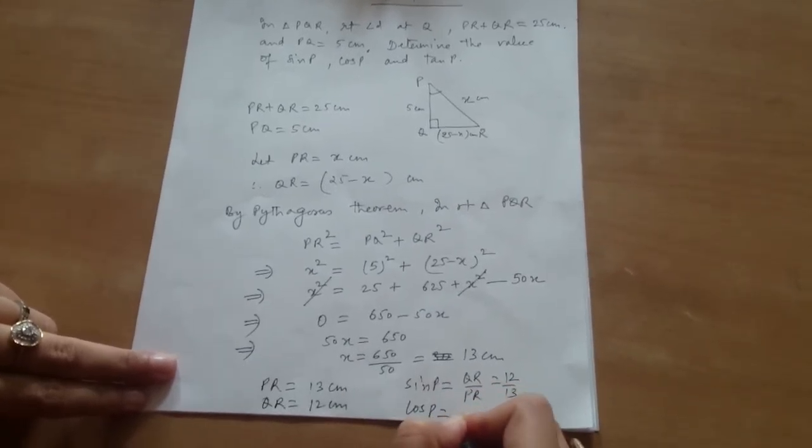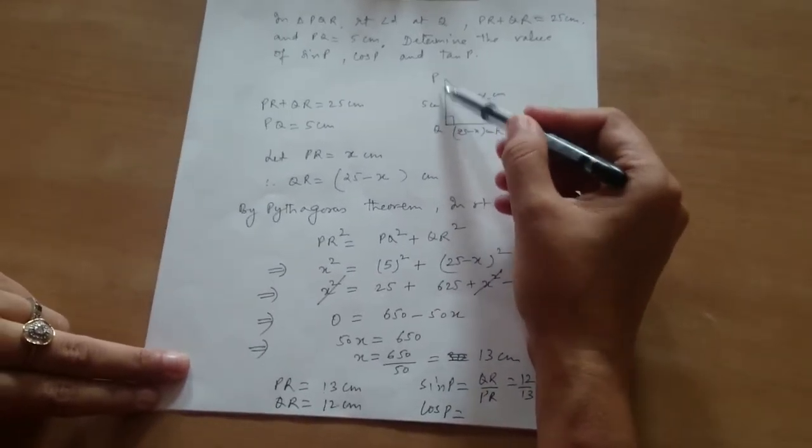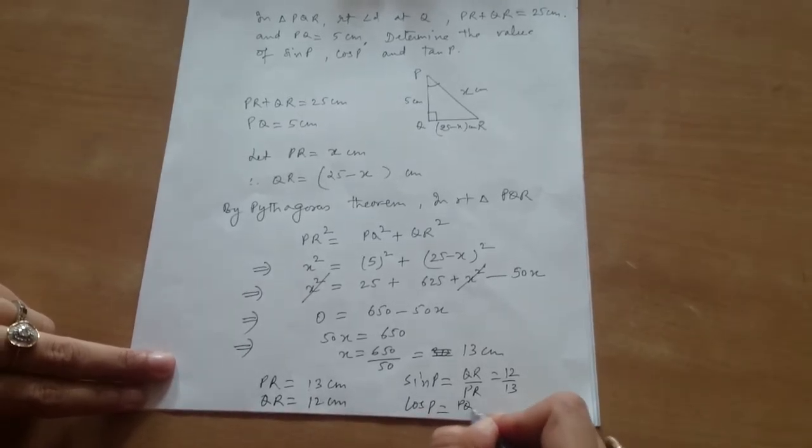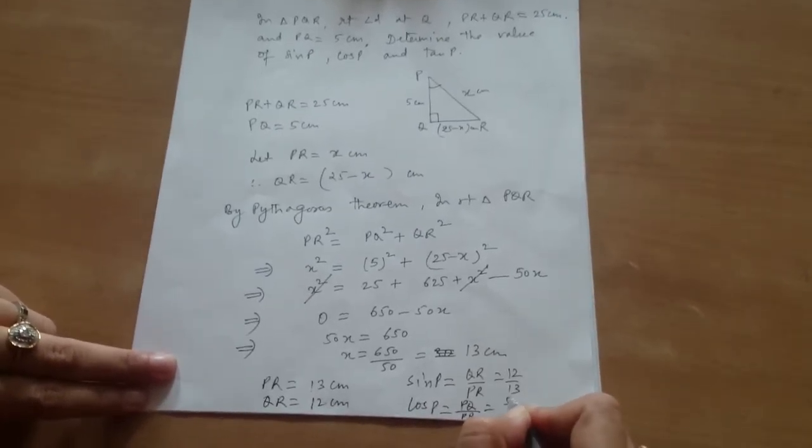Cos P. Cos P will be PQ by PR, which is 5 by 13.